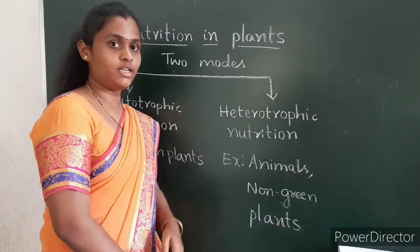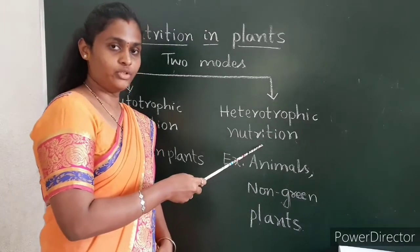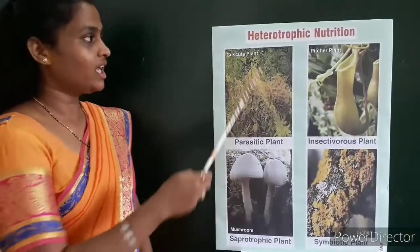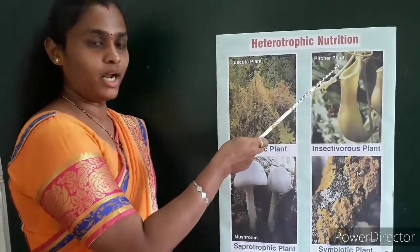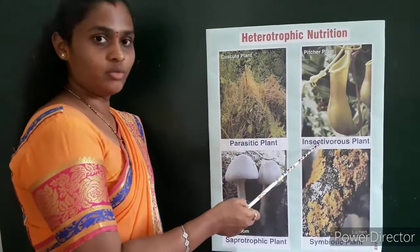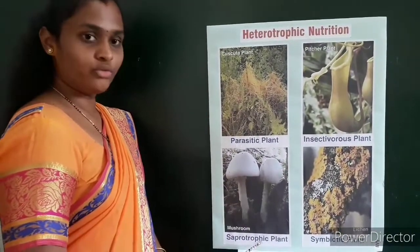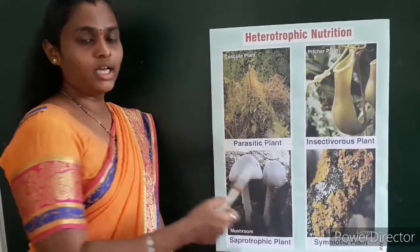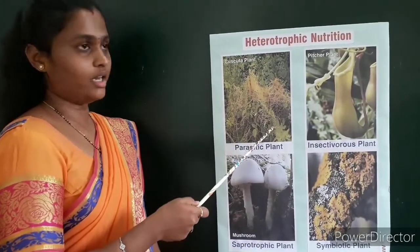Let us understand in detail about heterotrophic nutrition in plants. There are four types of heterotrophic nutrition in plants: parasitic plants, insectivorous plants, saprotrophic plants, and symbiotic plants. Let us understand one by one in detail.